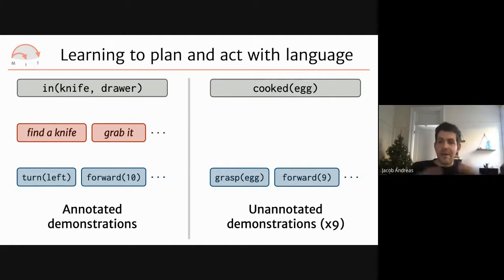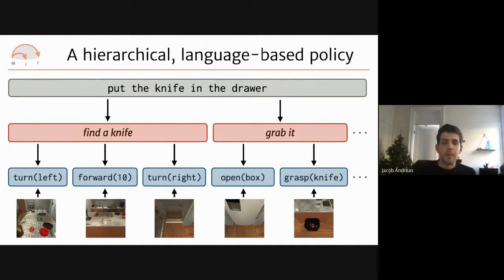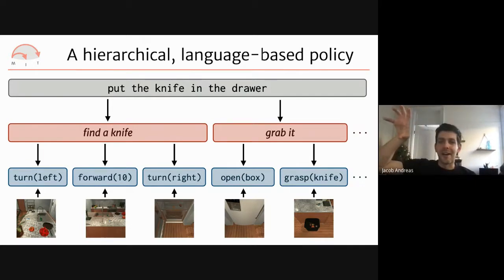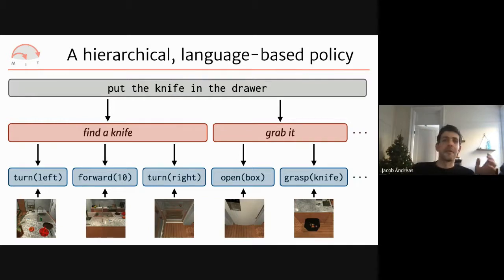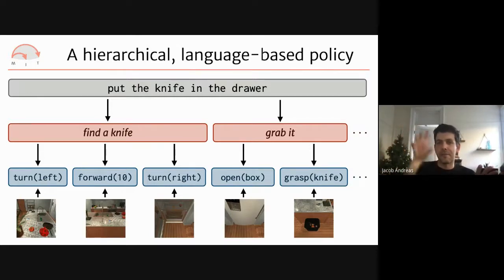The problem formulation: we have an environment, goals, demonstrations, and at training time only, a few instructions. We use these to build an agent that maps goals to actions autonomously. The policy maps from high-level goals to sequences of high-level actions, then from high-level actions to low-level actions — where high-level actions are now natural language descriptions of abstract behaviors rather than predefined skills.